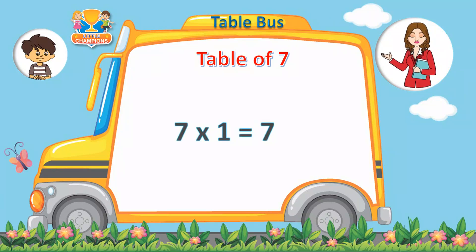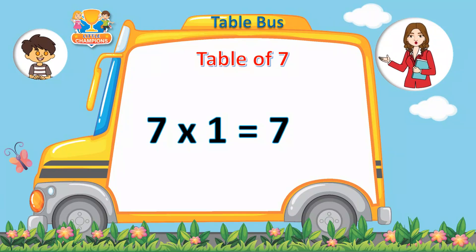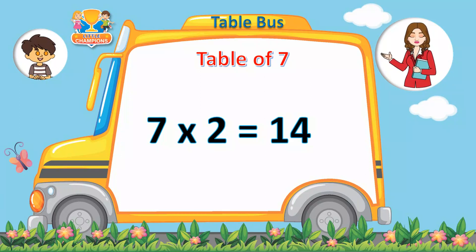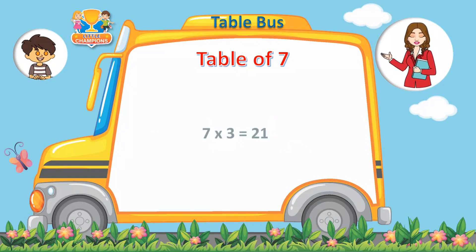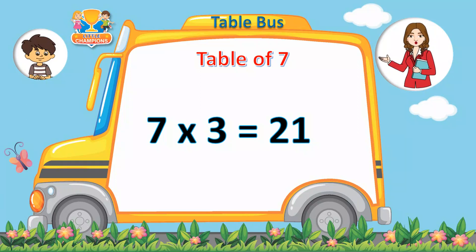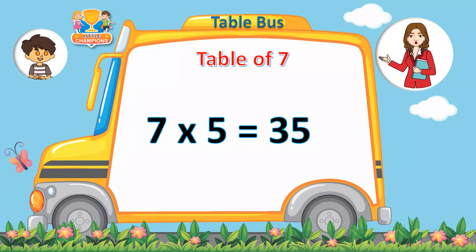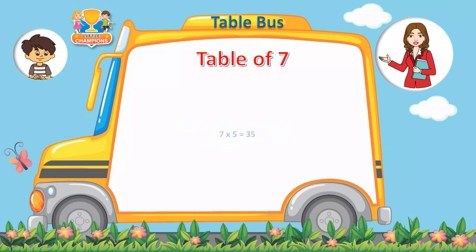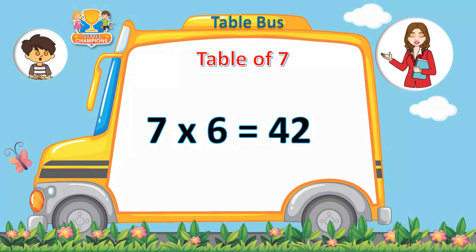7 1s are 7. 7 1s are 7. 7 2s are 14. 7 2s are 14. 7 3s... 7 5s are 35. 7 5s are 35. 7 6s are 42. 7 7s are 49.